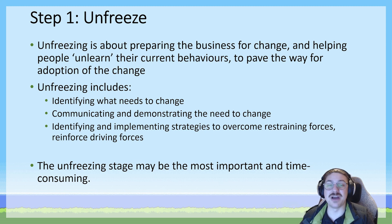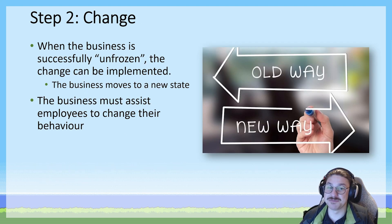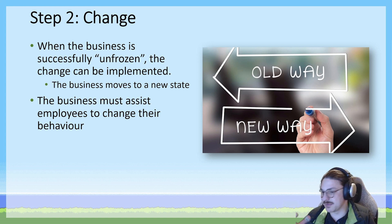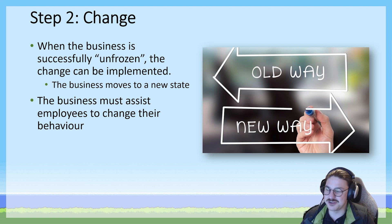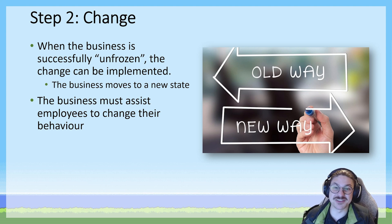If you don't unfreeze properly, Lewin says successful implementation of change is much more up to chance. The second stage is the simplest: change. Whatever it is — once your business is unfrozen, whether you're implementing a new strategy, a new methodology, making significant recruitments, redeploying resources, or restructuring — whatever the change is, do the change. That's step two. Not much more to say about it.